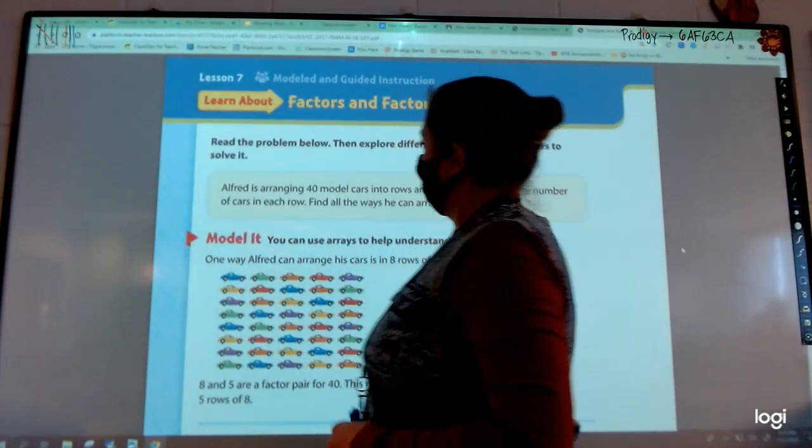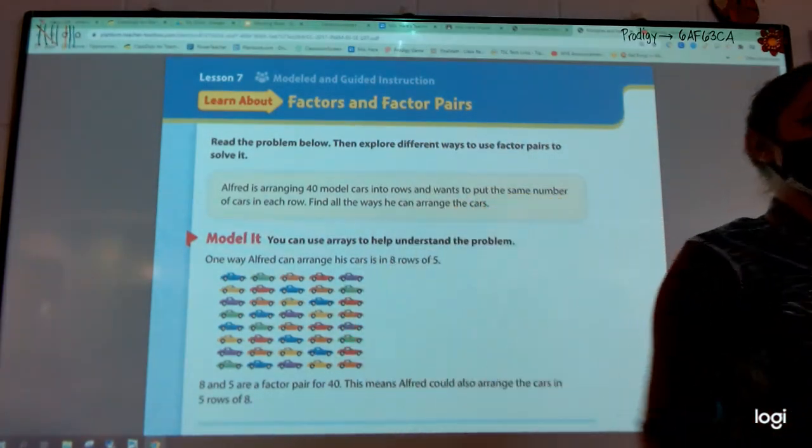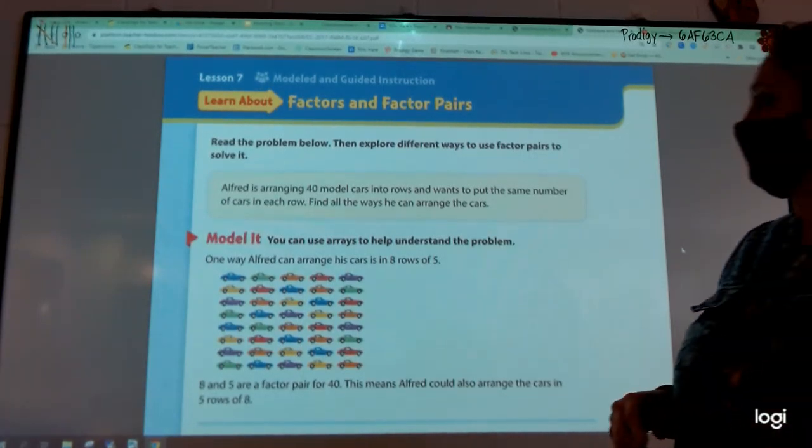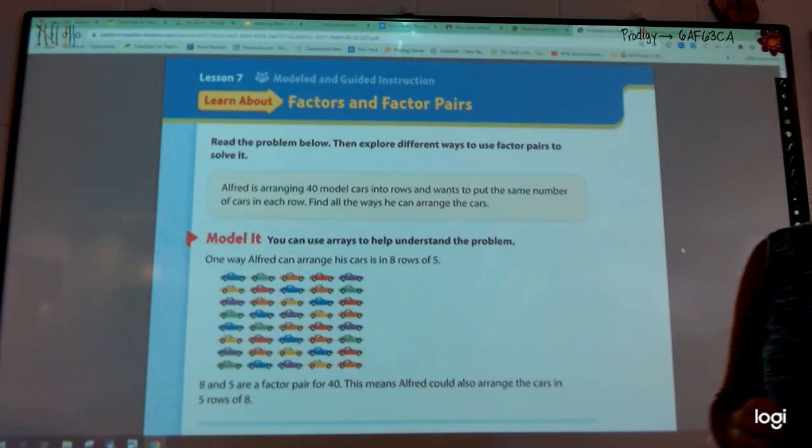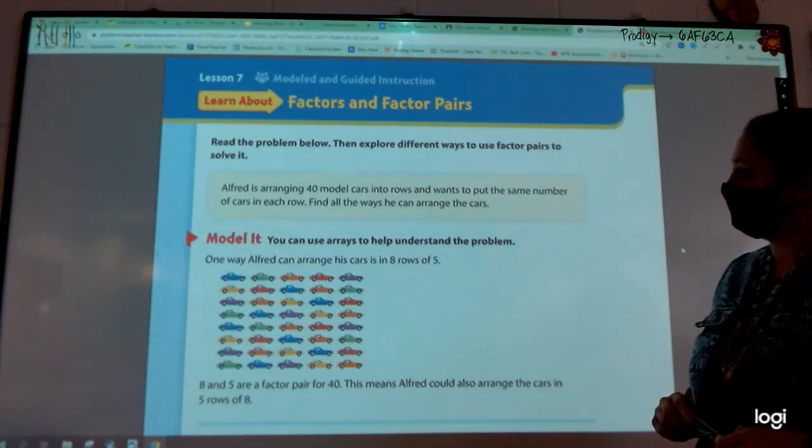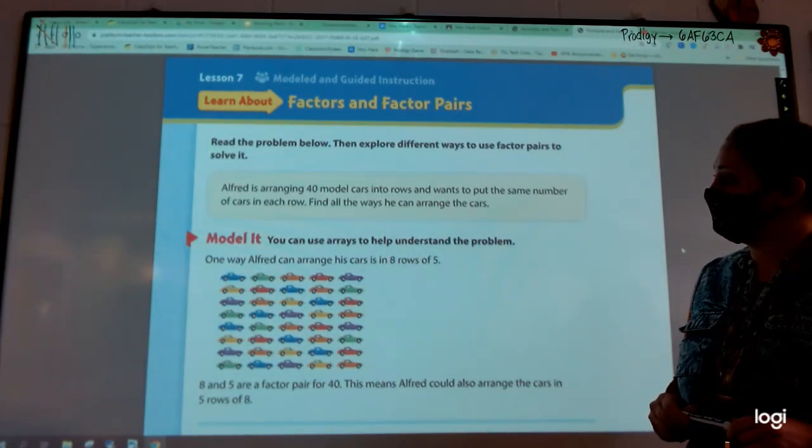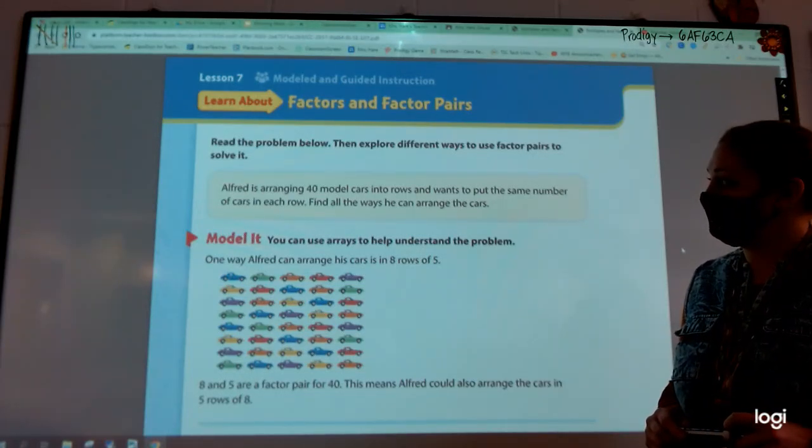I need somebody to read this top portion all the way down into this tan box. Factors and factor pairs. Read the problem below and then explore different ways to use factor pairs to solve it. Alfred is arranging 40 model cars into rows and wants to put the same number of cars in each row. Find all the ways he can arrange the cars.